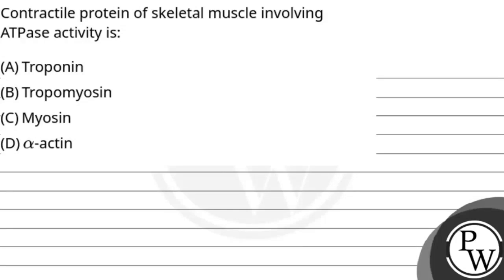Let's read the question. The question says: contractile protein of skeletal muscle involving ATPase activity is — option A: troponin, option B: tropomyosin, option C: myosin, and option D: alpha actin. The key concept that will be used here is the structure of proteins involved in muscle contraction.